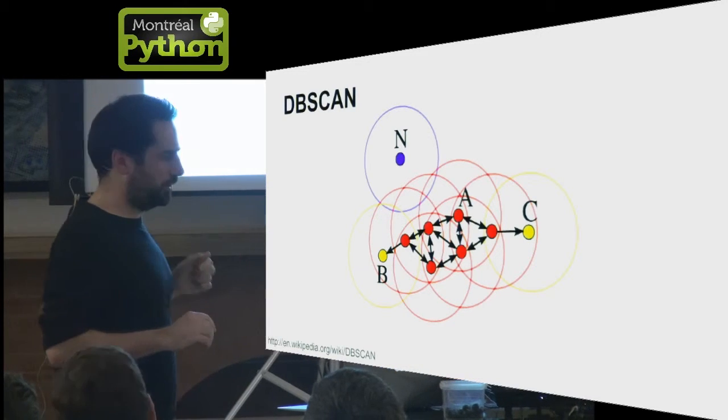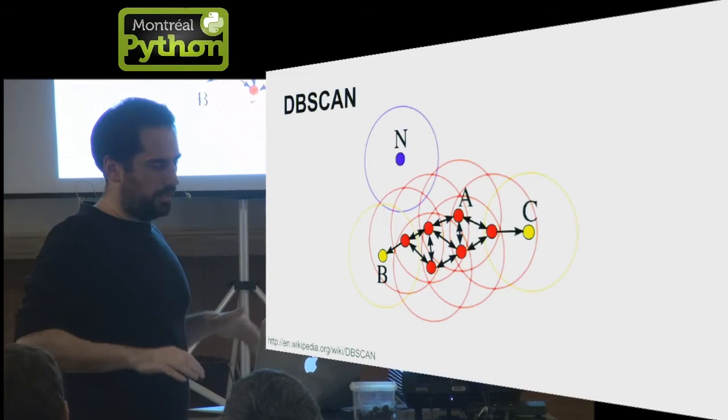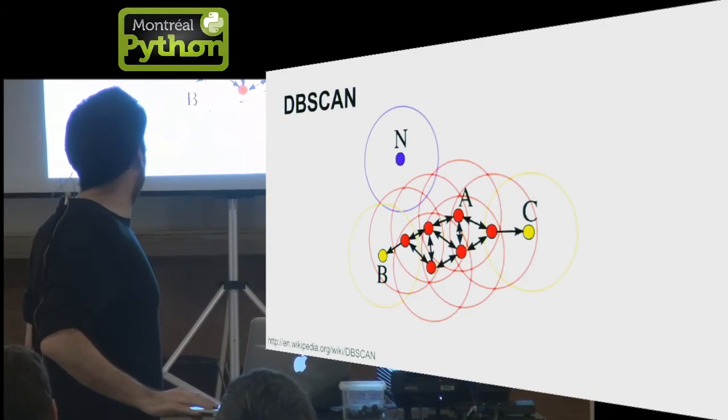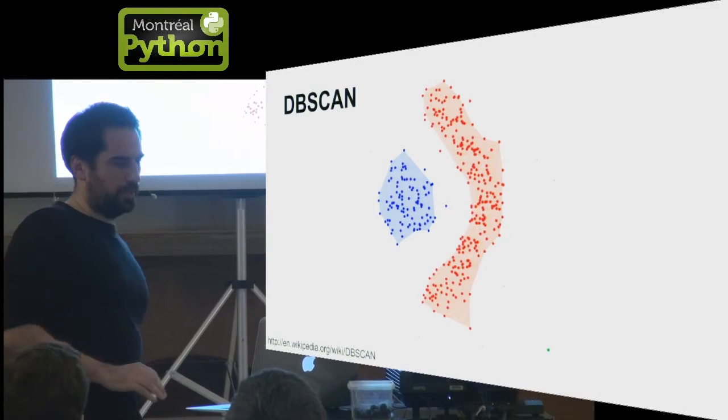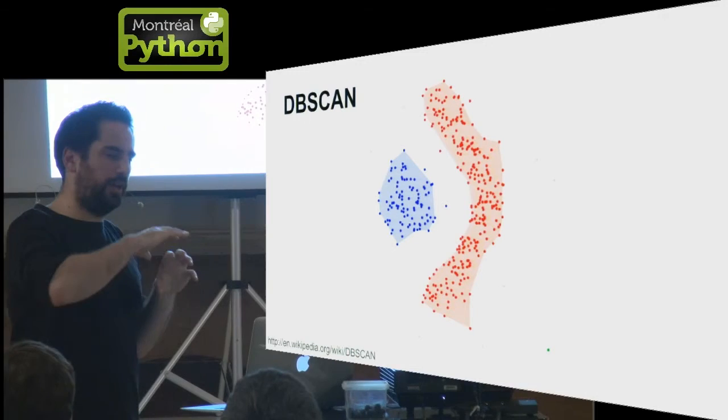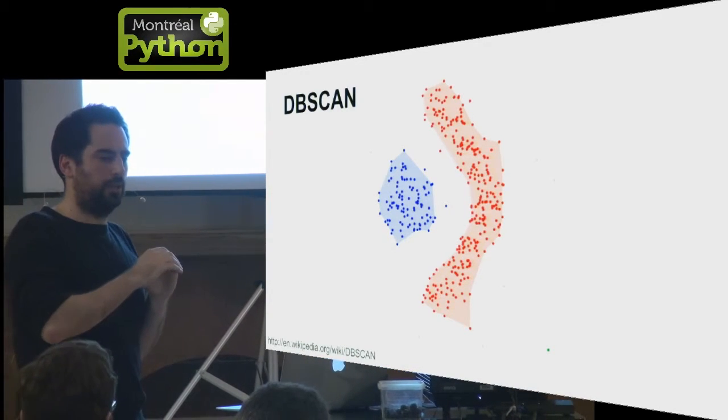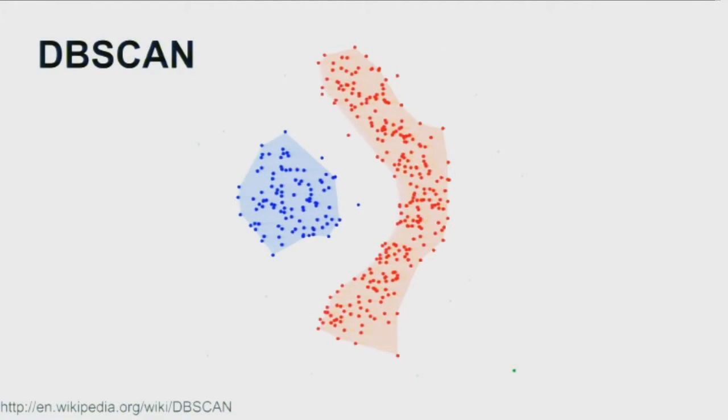An interesting feature of DBSCAN is that it can identify stuff that are outliers and leave them away, and do not create clusters for noise points, basically. Another feature of DBSCAN that is very interesting is that it's able to find separation boundaries between clusters that are non-linear, non-convex clusters, which can be useful especially in low-dimensional data like geo-data for instance.